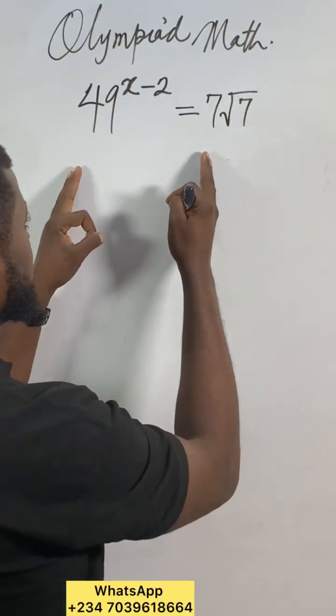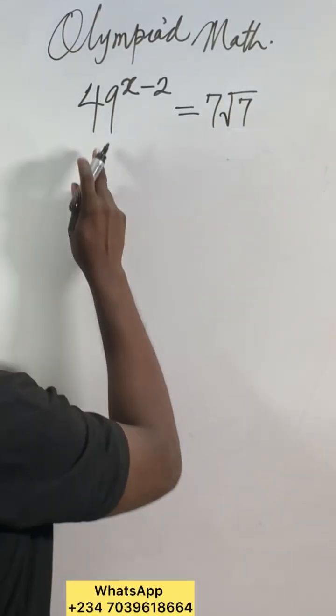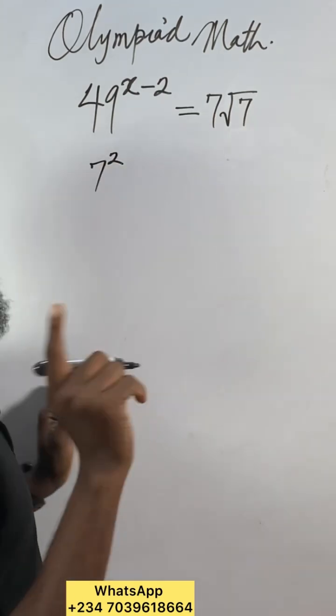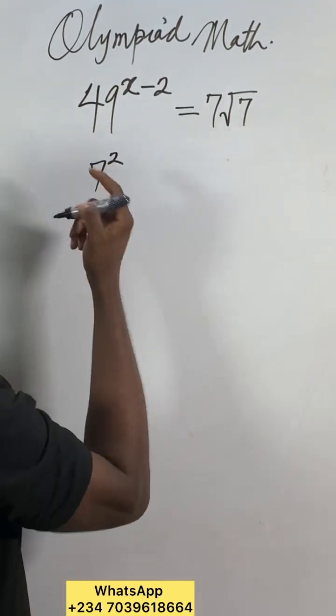Okay, this one, let's see how we can solve this. What we'll do is reduce 49. We can put it as 7 to the power of 2 because the base is 7. Then here, what we'll do is make sure we have the same base.